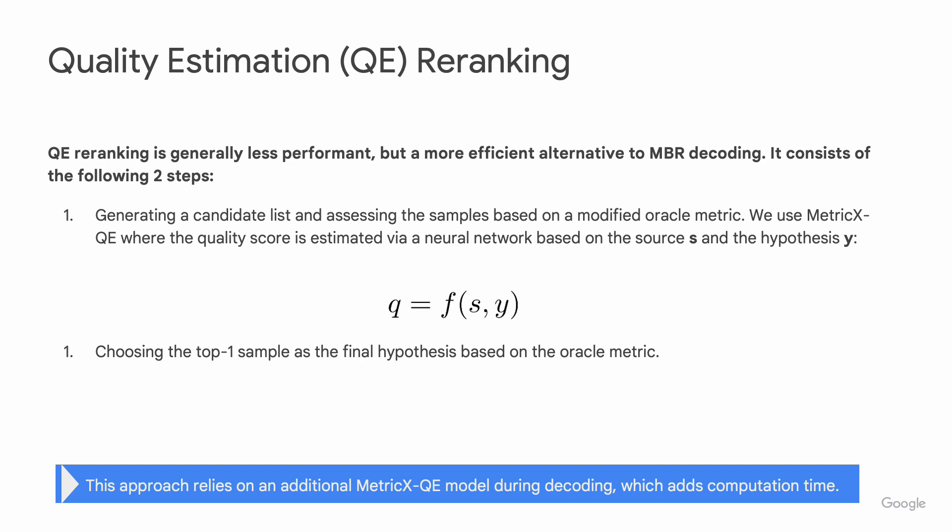QE re-ranking, on the other hand, is a more efficient alternative. It involves two steps: generating a candidate list and assessing samples using a MetricX QE model, then selecting the top hypothesis based on the quality score. While more efficient, it still requires an additional MetricX QE model during decoding, adding computation time.